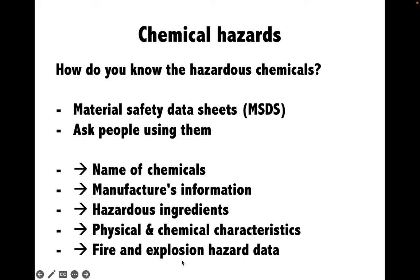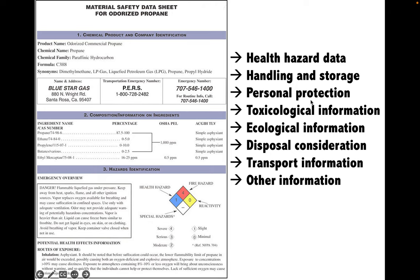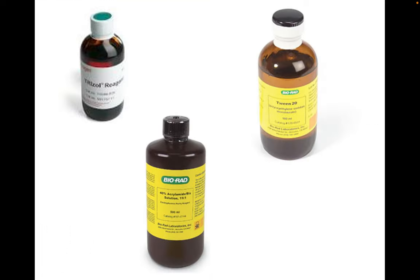The MSDS also includes fire and explosion hazard data, health hazard data, handling and storage, personal protection, toxicological information, ecological information, disposal considerations, transport information and other information. You can also learn from the labels on the containers of the chemicals as well.